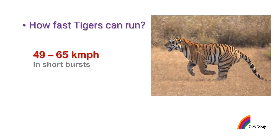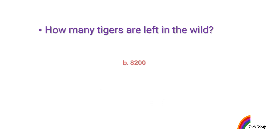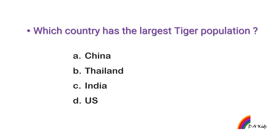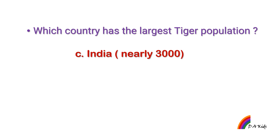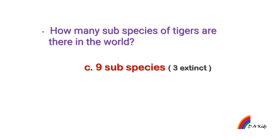Tigers can run 49 to 65 kilometers per hour. How many tigers are left in the wild? 3,200. How many subspecies of tigers are there in the world? 9 subspecies, 3 extinct.